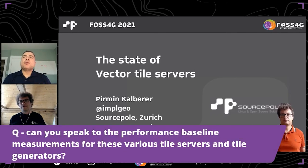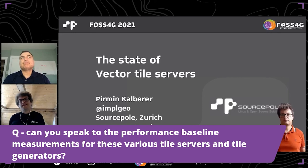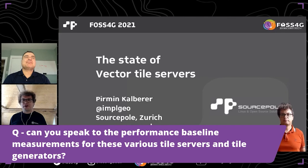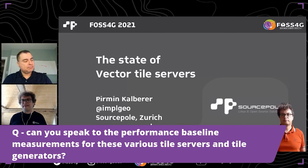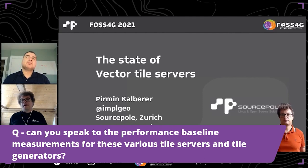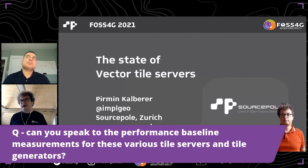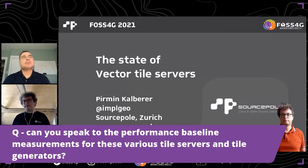Next question: can you speak to the performance baseline measurements for these various tile servers and tile generators? We did a vector tile server shootout — like the old WMS shootouts — about two years ago at FOSS4G. The result was that the difference is not that big and not as important a topic as you might assume. All of them are fast; there is no slow server. If you produce files, in the end performance is just network performance. If you have many users, you produce a cache and serve it with an HTTP server.